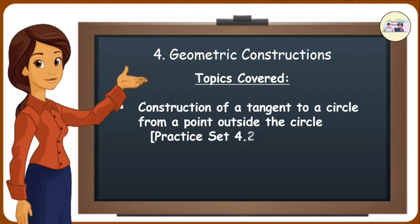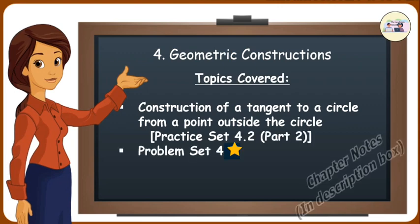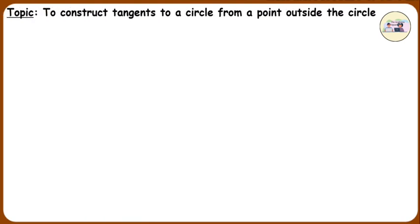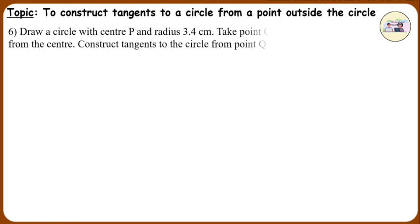Geometric constructions. To construct tangents to a circle from a point outside the circle. Practice set 4.2, question number 6: Draw a circle with center P and radius 3.4 cm. Take point Q at a distance 5.5 cm from the center. Construct tangents to the circle from point Q.